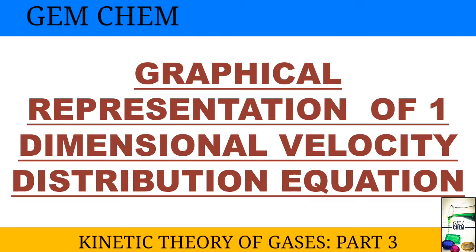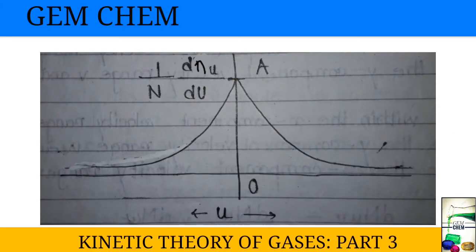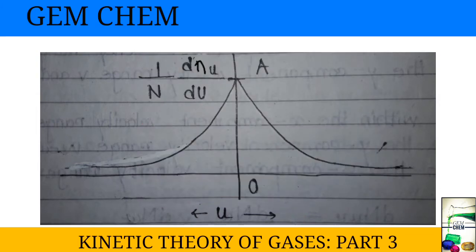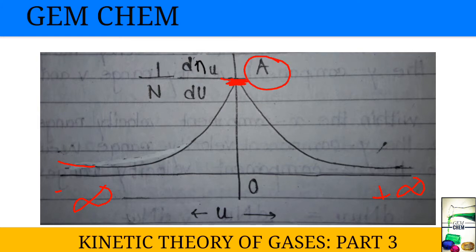Now we will see the graphical representation of the one-dimensional velocity distribution equation. The one-dimensional velocity distribution uses the x-component of velocity, denoted u. The horizontal axis represents velocity and the vertical axis represents probability distribution. Plotting the equation gives a bell-shaped curve extending from minus infinity to plus infinity, and the peak value of the distribution is the constant A that we have already obtained.